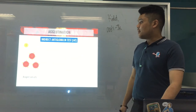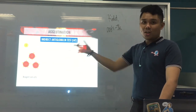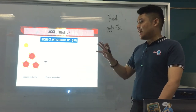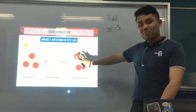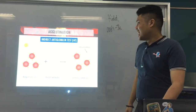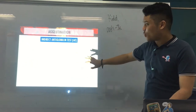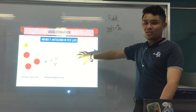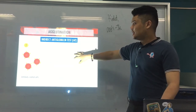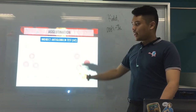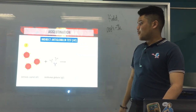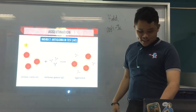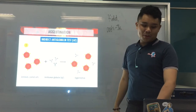For the IAT procedure: reagent red blood cells from the patient plus patient antibodies are combined and incubated in vitro. Unbound antibodies are then removed by washing. It then follows the same procedure as DAT — AHG is added, bridges the gap, forms the lattice, and results in agglutination.